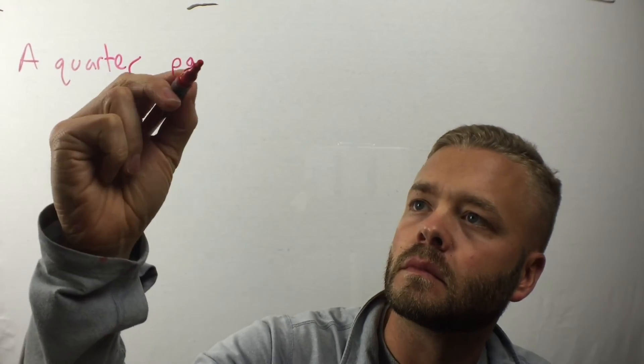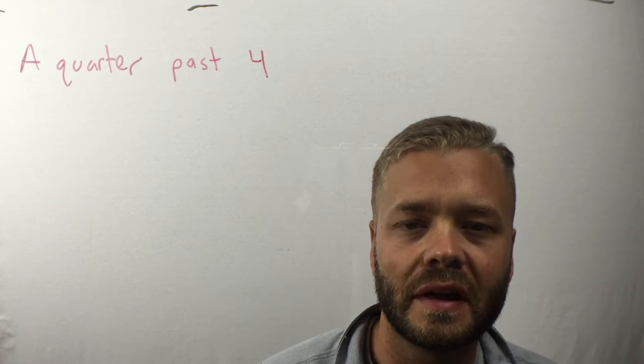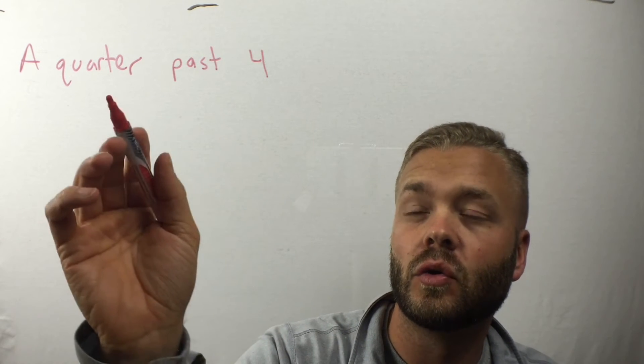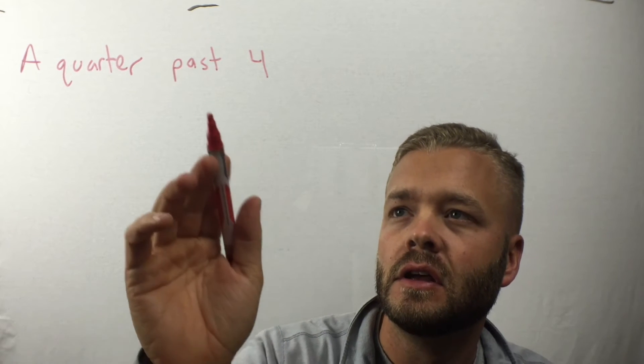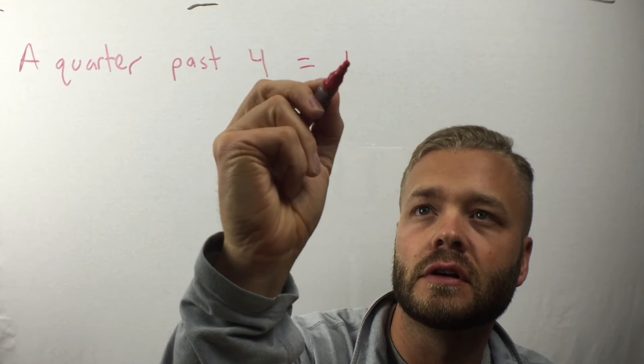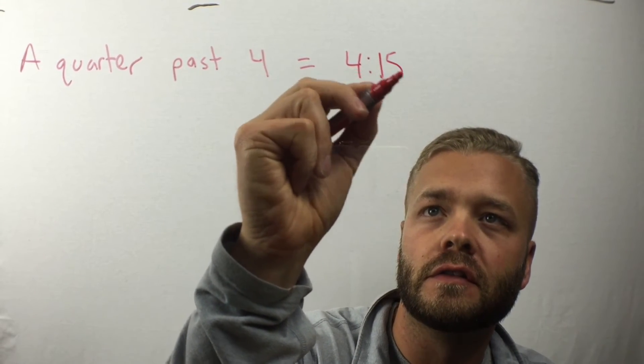Let's try it now in the form of a sentence. What happens when you have a quarter past four? Now let's remember, a quarter hour is 15 minutes. So let's go 15 minutes past four. A quarter past four is 4:15.